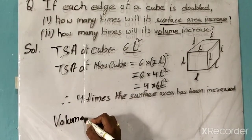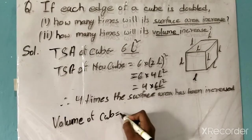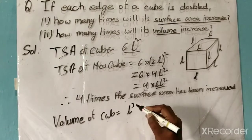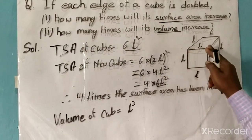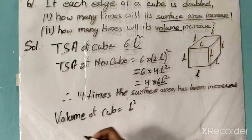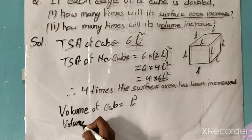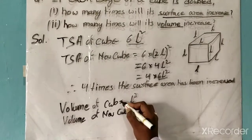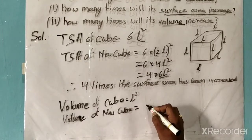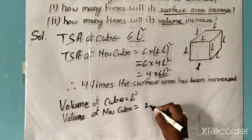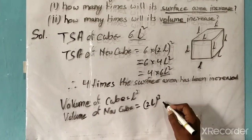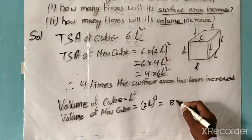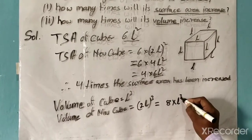Now the next part is volume. The volume of the original cube is equal to L cubed. Suppose the edges have been doubled, so the volume of the new cube will be equal to (2L) the whole cube.